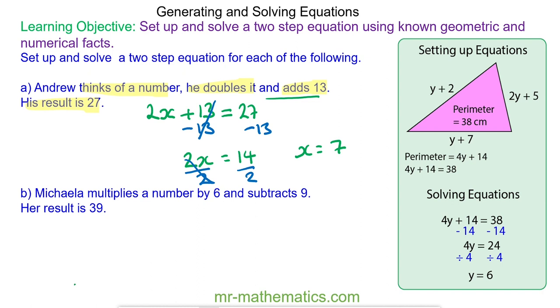And we can check this works. We think of a number 7. He doubles it to make 14 and he adds 13 to it to get 27. So we know that x is equal to 7.